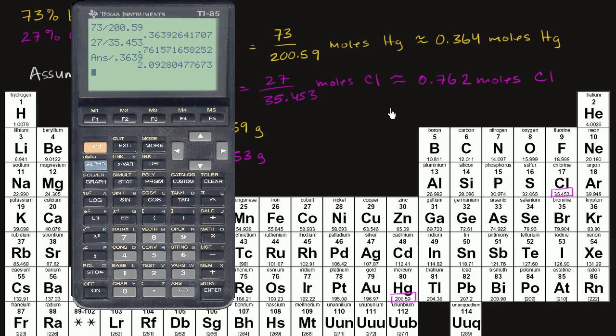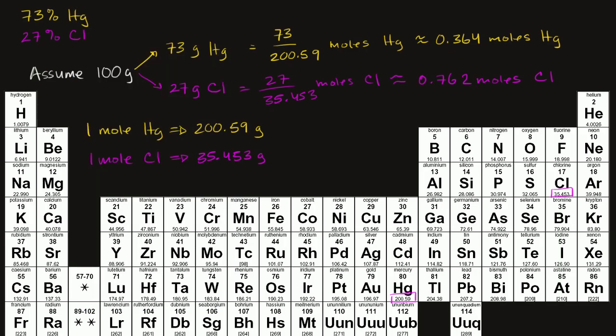You can say roughly the ratio of chlorine to mercury is two to one. You have two chlorines for every mercury. And because of that, you could say, well, this is likely to be,